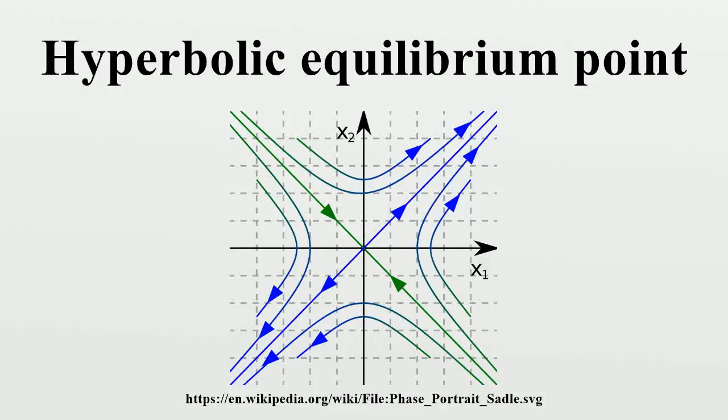Near a hyperbolic point, the orbits of a two-dimensional non-dissipative system resemble hyperbolas.